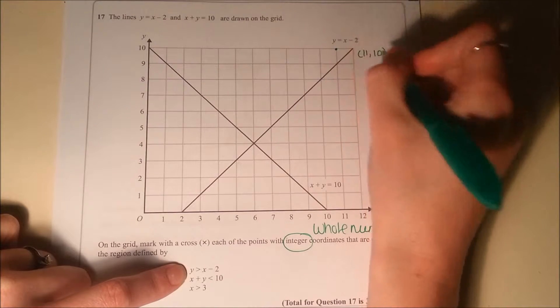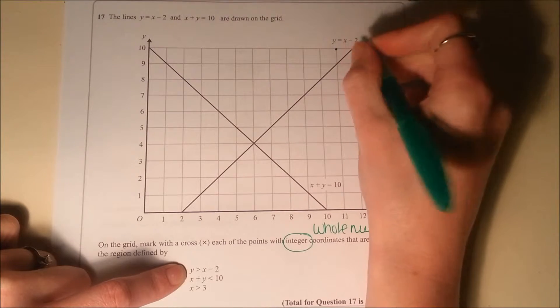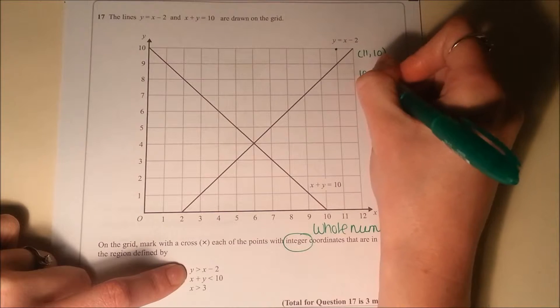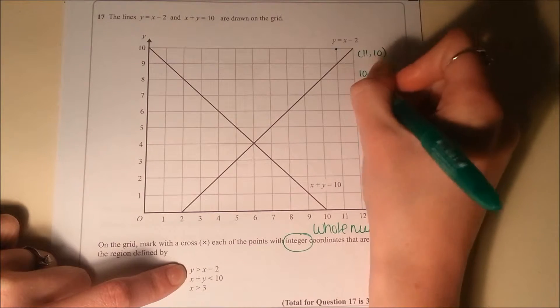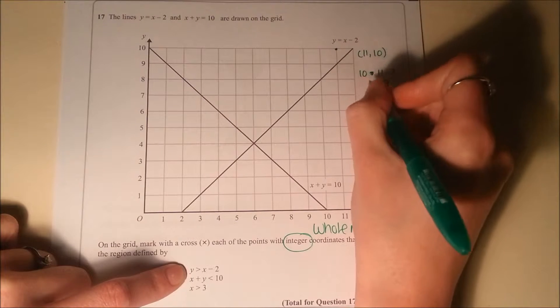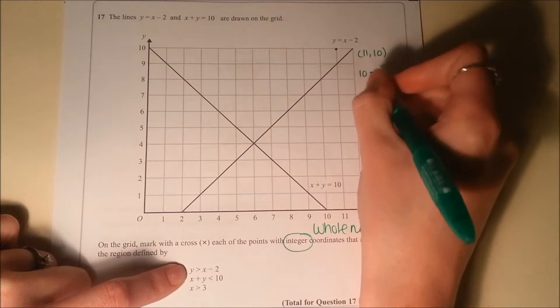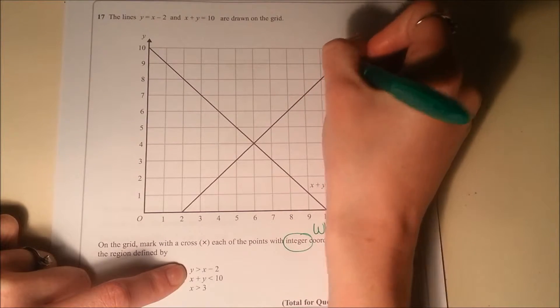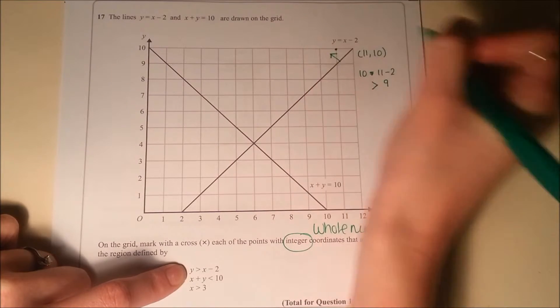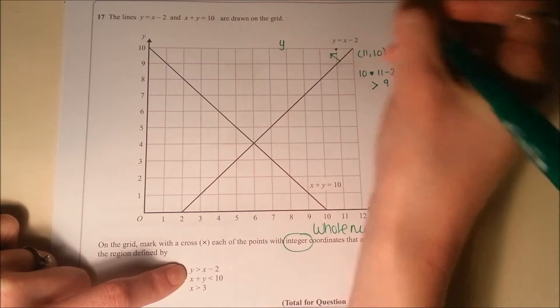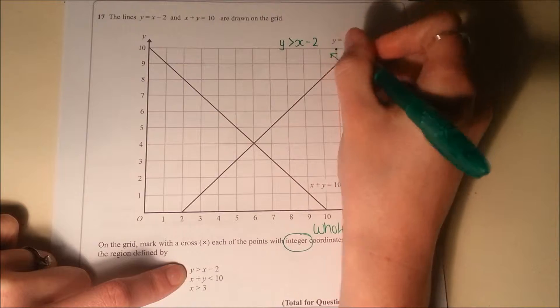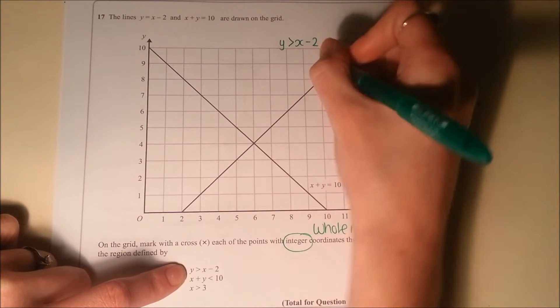So here y is 10, and x minus 2 would be 11 minus 2, so that would be 9. So the correct symbol we'd need there, 10 is bigger than 9, so it'd be that way. So all of the points that are this side of the line are the ones where y is greater than x minus 2. So first of all, we're looking for points that are this side of the line.